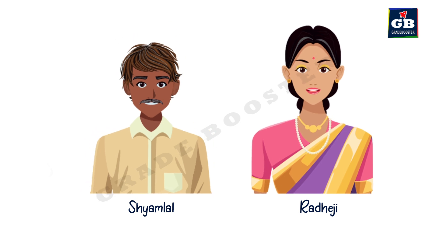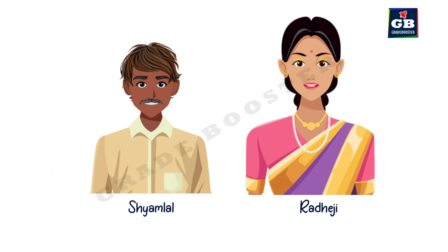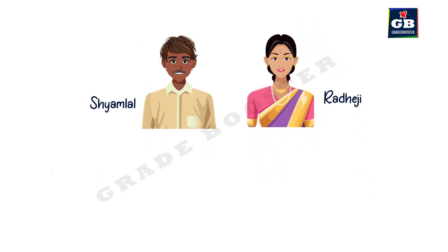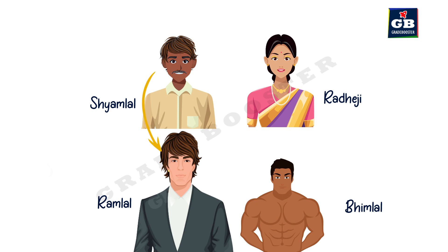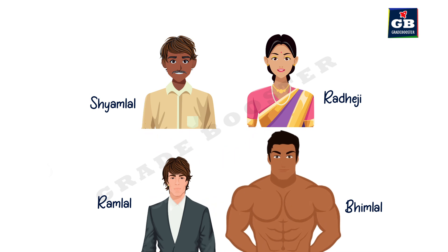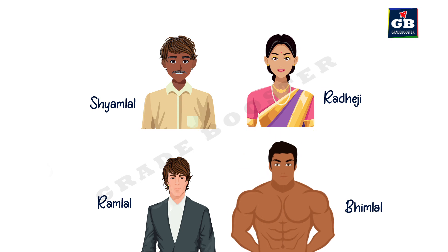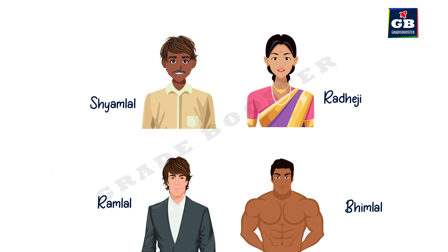Here we have the family of Shamlal and Radiji. Shamlal has brown hair and dark skin. Radiji has fair skin and black hair. Their son Ramlal has brown hair inherited from his father and fair skin inherited from his mother. Their son Bhimlal has dark complexion inherited from his father and black hair inherited from his mother. This is how Ramlal and Bhimlal inherited traits from their parents.